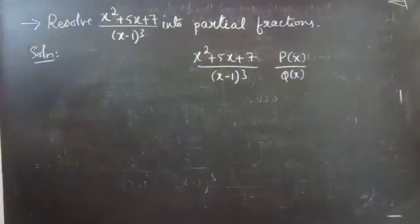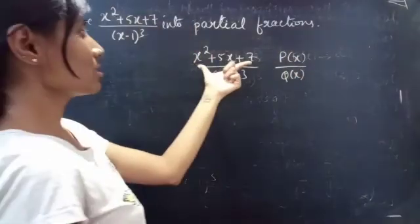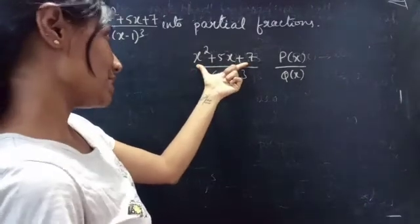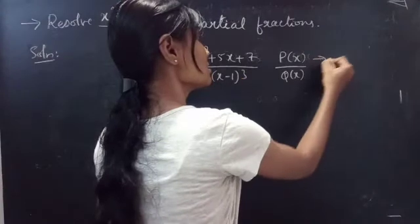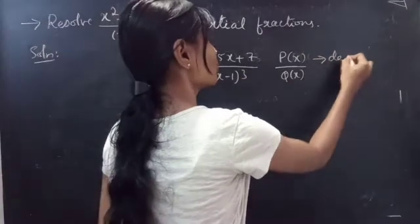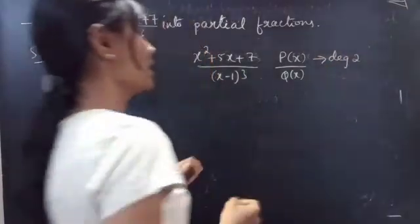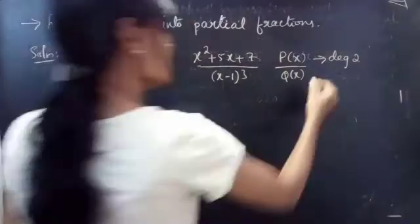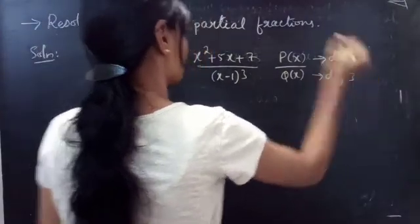Let us consider it as P(x) / Q(x). So here P(x) is x² + 5x + 7. The degree of P(x) is 2 and the degree of Q(x) is obviously 3.